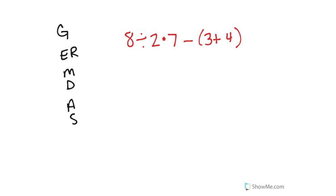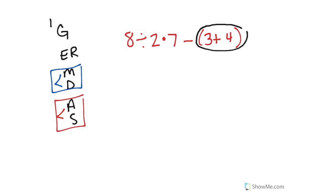I want to see germ desks written every single time that you have more than one operation. Writing this out is really going to help me make sure that I do everything in order. So let's do step number 1. Do I have any groups? Yes I do — I have parentheses right here. There's my grouping symbol. Let's do that first. I circled it so my eyes go directly there. What's 3 plus 4? 7.